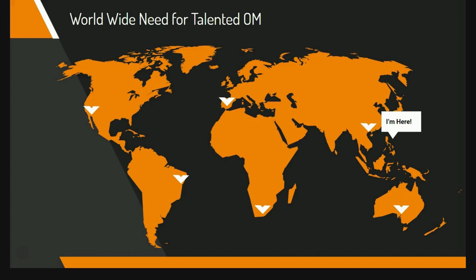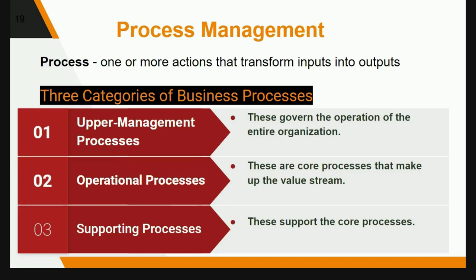Now we talk about process management. A process is one or more functions or actions that transform inputs into outputs. There are three categories of business processes: upper management processes, which are the objectives that govern the operation of the entire organization; organizational processes, which are the core processes that make up the value stream; and supporting processes, which support the core processes and involve workers and supervisors.